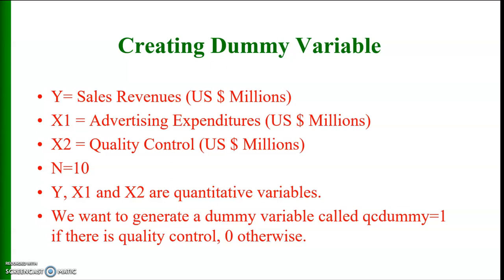In today's example, I will use some hypothetical data. The number of observations is 10 and I have three variables. My dependent variable is sales revenue, which is measured in US dollar millions. Advertising expenditure, denoted by x1, is also measured in US dollar millions. The next variable is x2, which is quality control, and it is also measured in millions of US dollars.